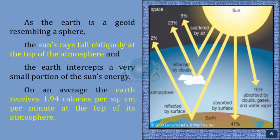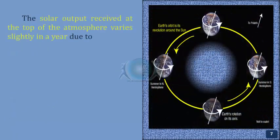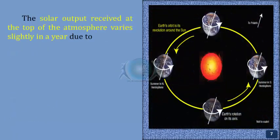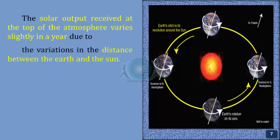On an average, the Earth receives 1.94 calories per square centimeter per minute at the top of its atmosphere. The solar output received at the top of the atmosphere varies slightly in a year due to the variations in the distance between the Earth and the Sun.